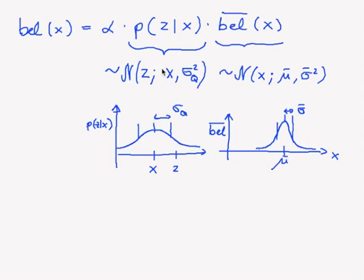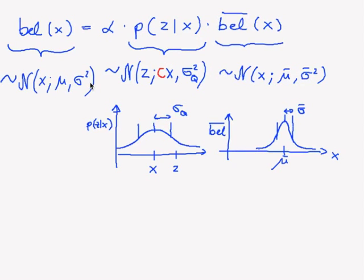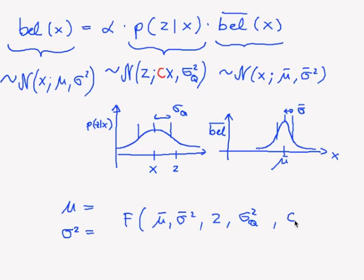We add a multiplication factor c, which in our explanation was 1, but in general it is a factor needed to transform from your state space x to your measurement space. For instance, your robot's position may be in centimeters while the measurement is in millimeters. This factor becomes important later when dealing with multi-dimensional distributions. All we hope for is that our resulting belief is also normally distributed with mean μ and variance σ squared, so that all we need to do is compute the new μ and σ squared as a function of the predicted μ and σ squared, the measurement, the measurement noise σ_q squared, and the multiplier c.